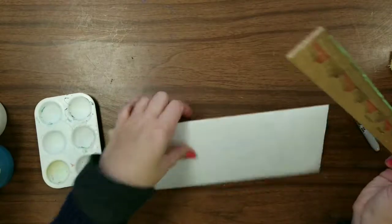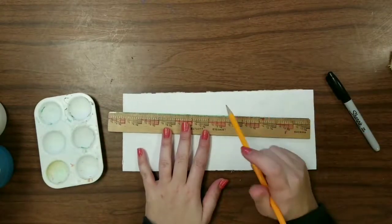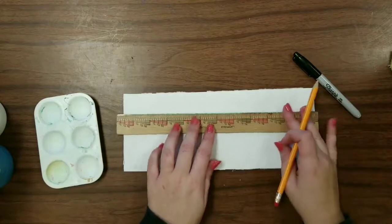You'll need your cardboard, your ruler, a pencil, and a sharpie to start the first part.